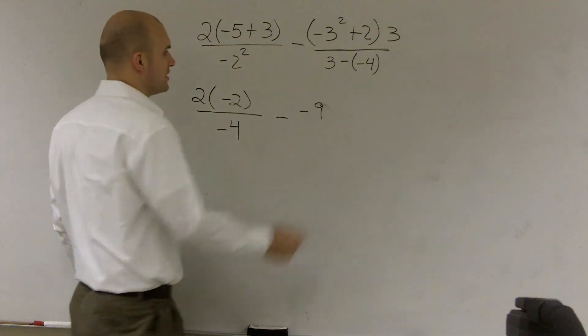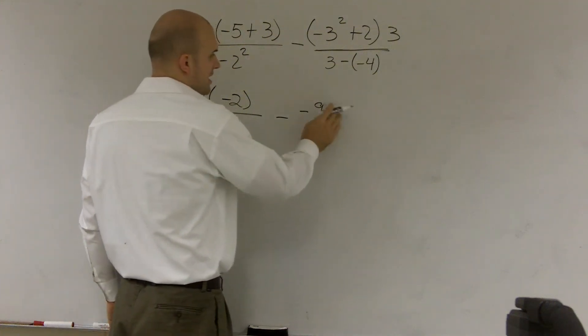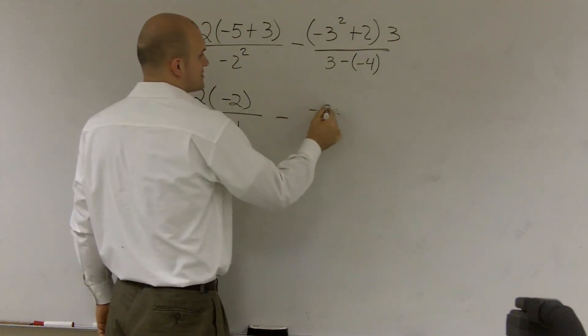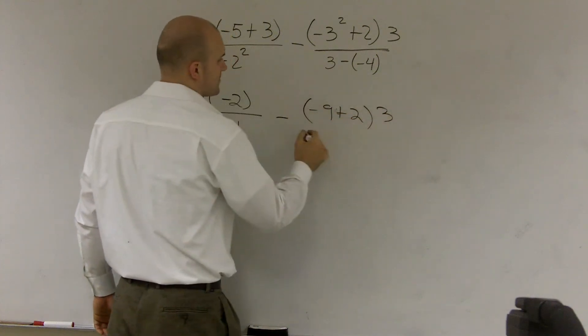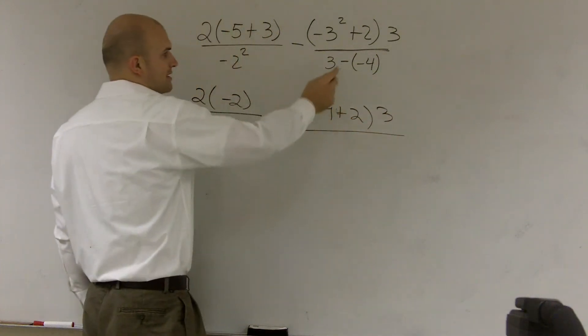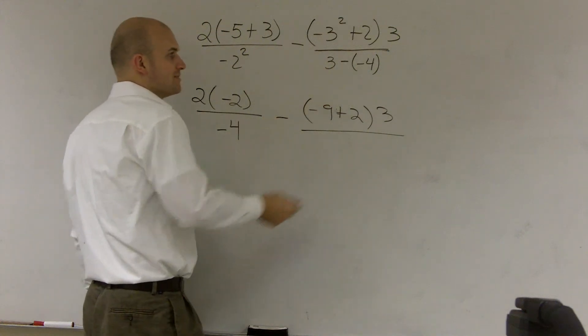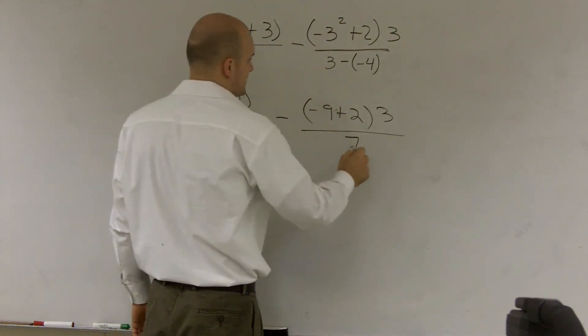So negative 3 squared is a negative 9 plus 2, and negative 9 plus 2 times 3, all over 3 minus a negative 4, is going to be a double negative will give us a positive 7.